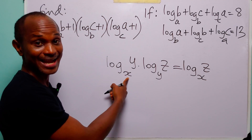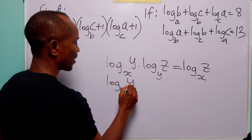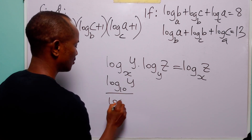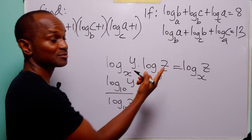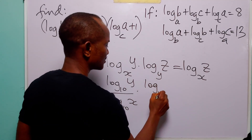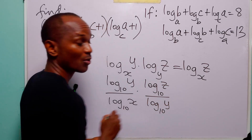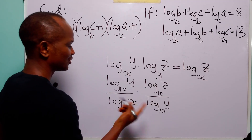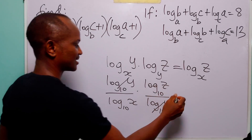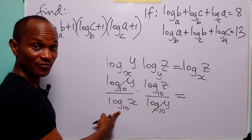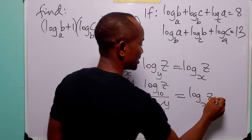We change the base to 10: log to base x of y becomes log base 10 of y divided by log base 10 of x, and log to base y of z becomes log base 10 of z divided by log base 10 of y. When we multiply these two, the log base 10 of y cancels, leaving log base 10 of z divided by log base 10 of x, which is the same as log to base x of z.